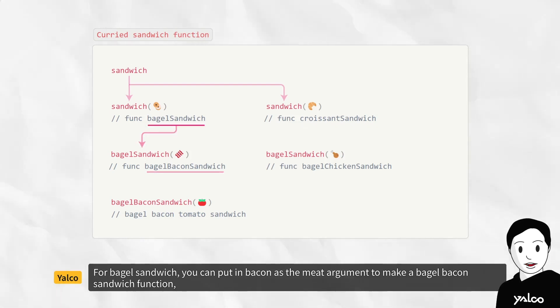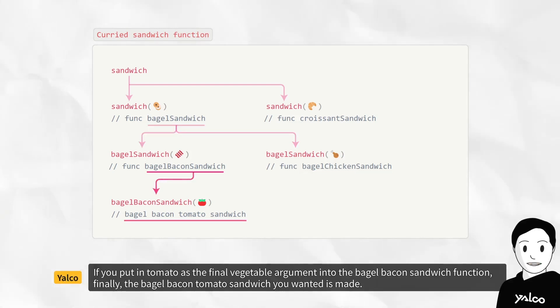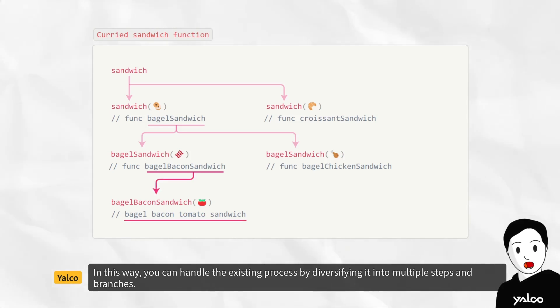For bagel sandwich, you can put in bacon as the meat argument to make a bagel bacon sandwich function, or you can put in chicken to make a bagel chicken sandwich function. If you put in tomato as the final vegetable argument into the bagel bacon sandwich function, finally, the bagel bacon tomato sandwich you wanted is made. In this way, you can handle the existing process by diversifying it into multiple steps and branches.